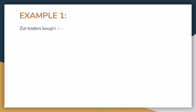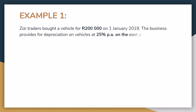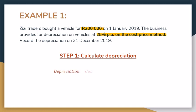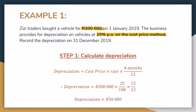So if we look at an example: ZZ Traders bought a vehicle for 200,000 Rand on the 1st of January 2019. The business provides for depreciation on vehicles at 25% per annum on the cost price method. Record depreciation on 31 December 2019. So basically at the end of the year. We've got a vehicle with a cost price of 200,000 and our depreciation method is the cost price method at 25%. So we first need to calculate depreciation — you know that it's cost price multiplied by the rate. In this case it's 200,000 Rand multiplied by 25% for the full year, so our depreciation is 50,000 Rand.